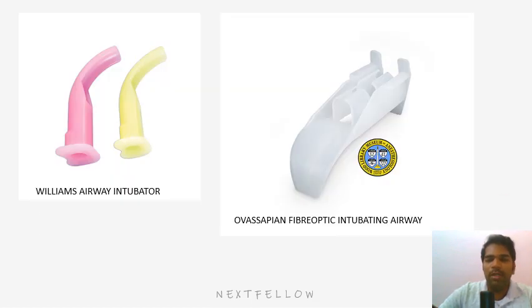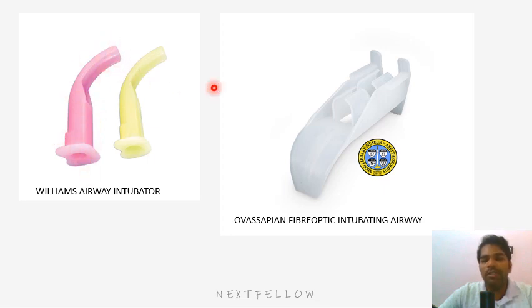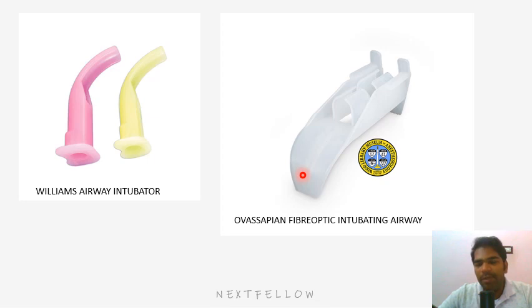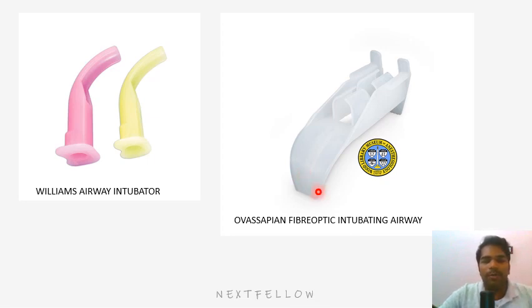Williams airway intubator and Ovassapian fiber optic intubating airway are more specialized. The Williams airway intubator has a curved angulation that aligns with the trachea, allowing you to pass a bougie through it for intubation. The Ovassapian fiber optic intubating airway has a channel through which a fiber optic bronchoscope — an endoscope that allows direct visualization of airway structures on a screen — can be inserted. Remember the pictures and names.